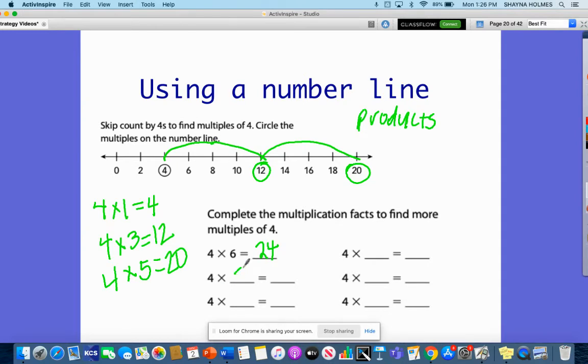I can do four times two is eight, eight is a multiple. Four times four is 16, that is a multiple. Four, let's do four times 10, 40 is a multiple of four.